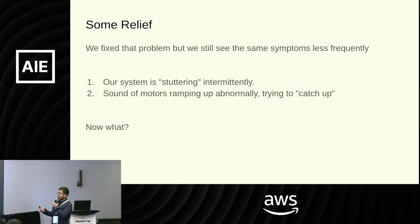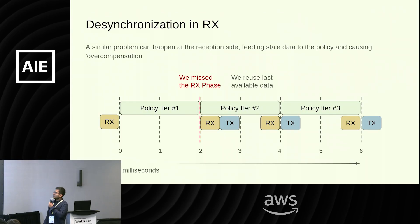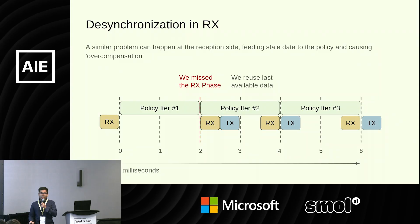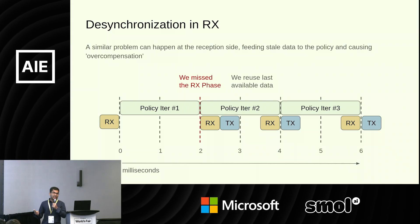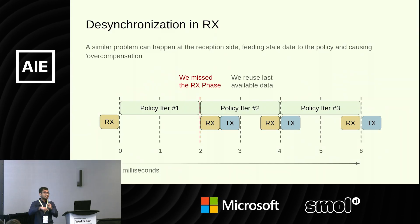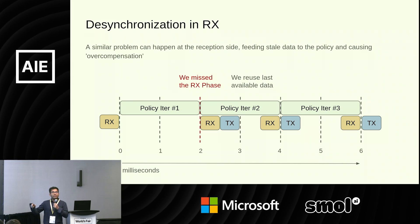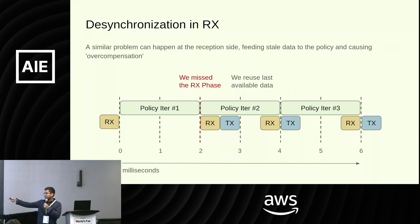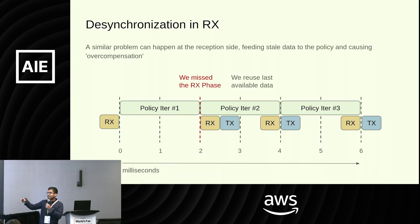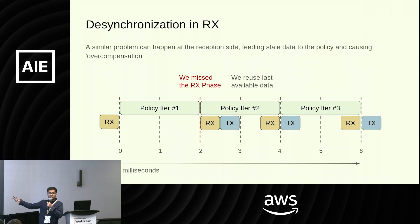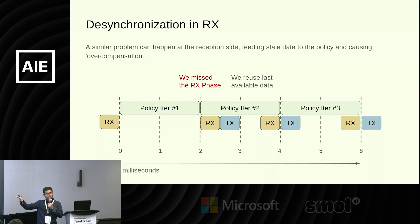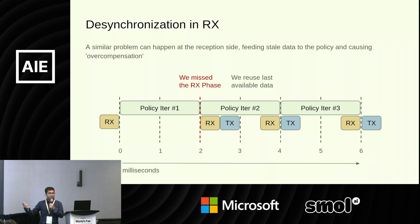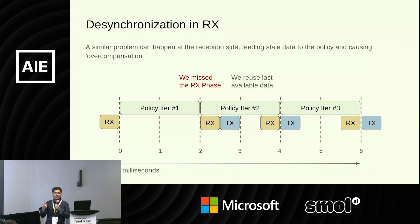There's one last issue we have to check: what happens if we desynchronize on the RX side? What happens if our thread is delayed? Our policy will not get the new data and will work with the last data. Because of that, the output will also be based on the last data. In policy iteration number two, we'll actually have an old command, and in policy number three we'll skip one of the data processings. Because of that, we'll see a sort of skip or catching-up behavior on the motors, which will sound almost like a jitter.